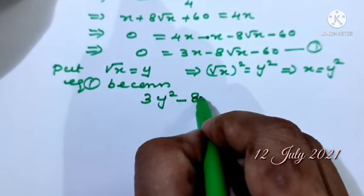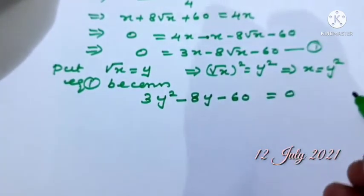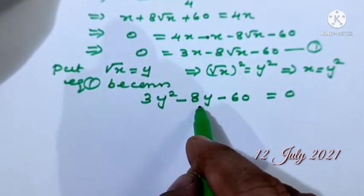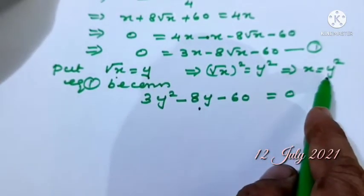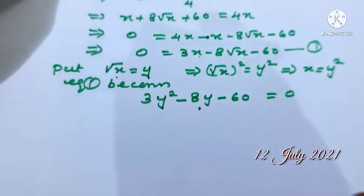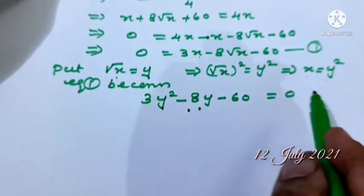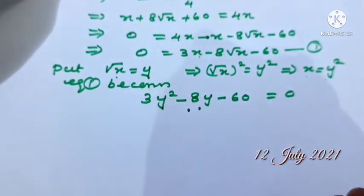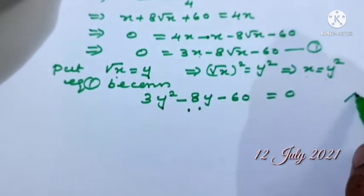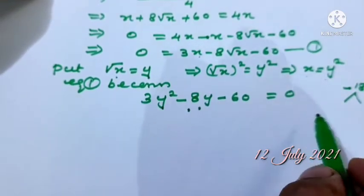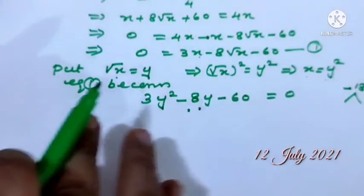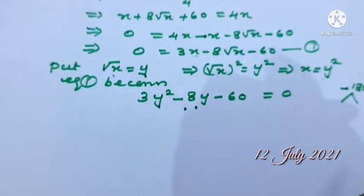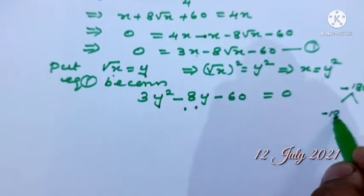Substituting X equals Y squared and root X equals Y into equation one: 3Y squared minus 8Y minus 60 equals 0. Here 8 root X becomes 8Y and X is replaced by Y squared. We need factors of 3 times 60 equals 180, which are minus 18 and plus 10, since minus 18 plus 10 equals minus 8.